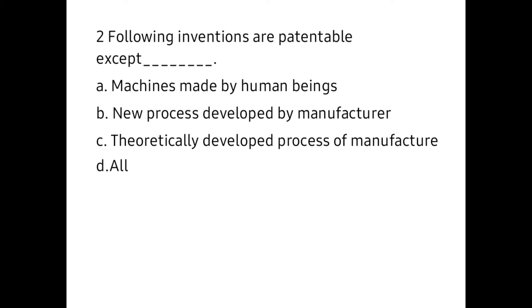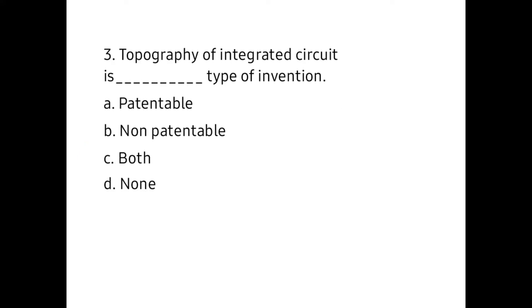c) theoretically developed process of manufacture, d) all. And the answer is C, theoretically developed process of manufacture. Third one: Topography of the integrated circuit is a _____ type of invention.